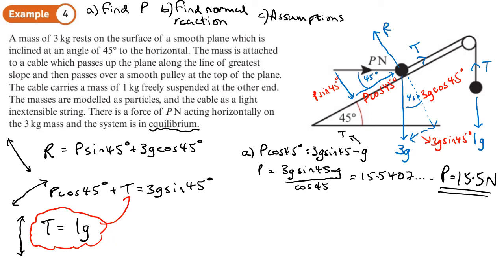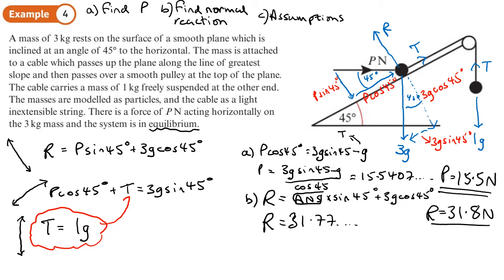Part b, we want to find a normal reaction. So now I can take that exact answer that I've got here. I'm going to press the answer button and put it in here. So I'm now going to do answer times by sin 45 plus 3 times 9.8 cos 45. And I'll write that down and that gives us this answer. 31.777. So three significant figures. 31.8 newtons is the normal reaction.